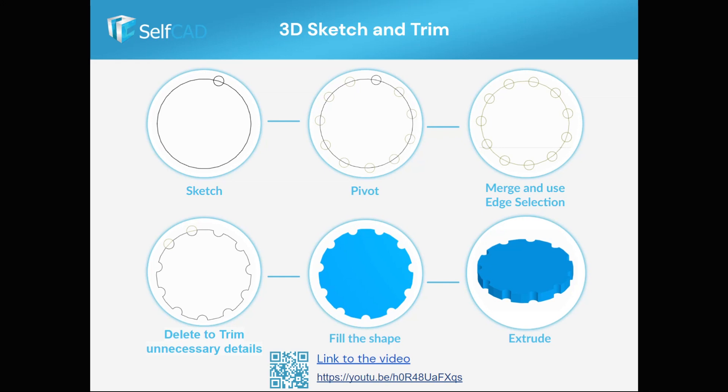In this example, you can see how it's done in SelfCAD and how you can use the multi-purpose pivot tool to automatically create many profiles and then merge and trim to get the final shape.